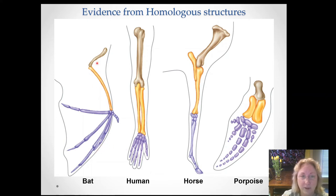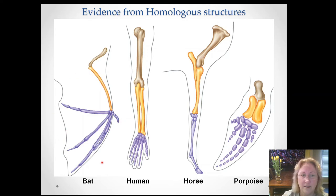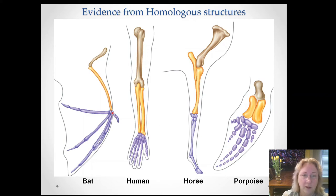Bats are mammals and the only mammals that have evolved true flight — there are gliding mammals like flying squirrels that don't have powered flight. And again, we have the one bone and the two bones; one of these bones is greatly reduced, then the small wrist bones and then digits. Bats use their digits to support the skin flap they use for flight, and they only really use their thumbs as a digit anymore, using those for climbing and hanging onto things.